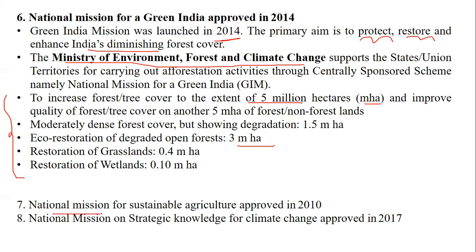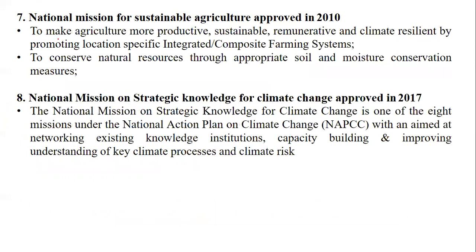Next is the National Mission for Sustainable Agriculture, approved in 2010. The aim is to make agriculture more productive, sustainable, remunerative, and climate-resilient by promoting location-specific integrated or composite farming systems. It also helps in conserving natural resources through appropriate soil and moisture conservation measures.